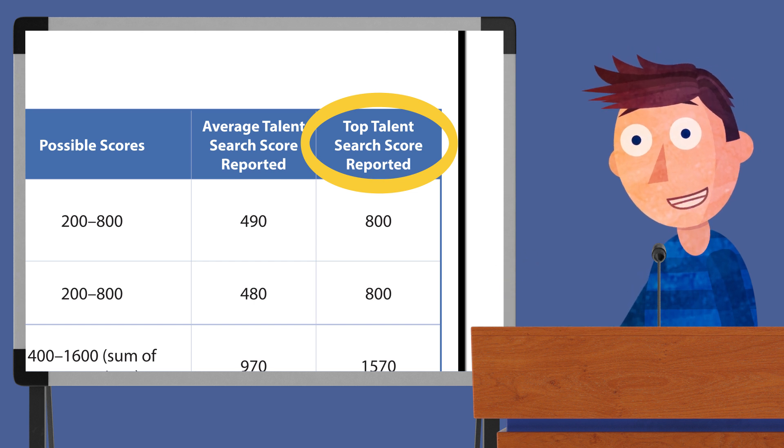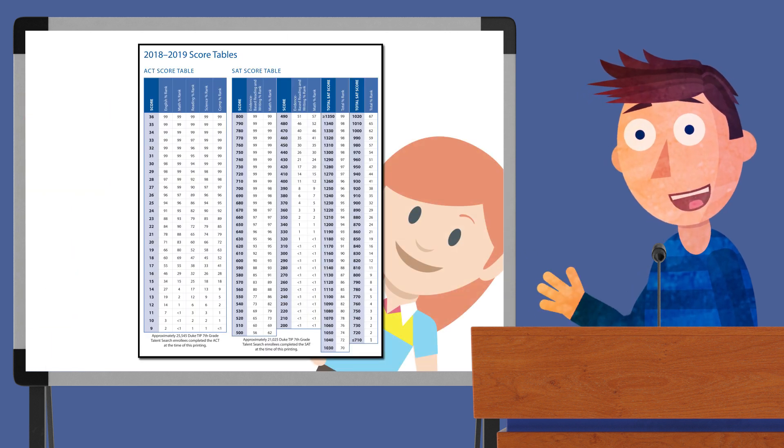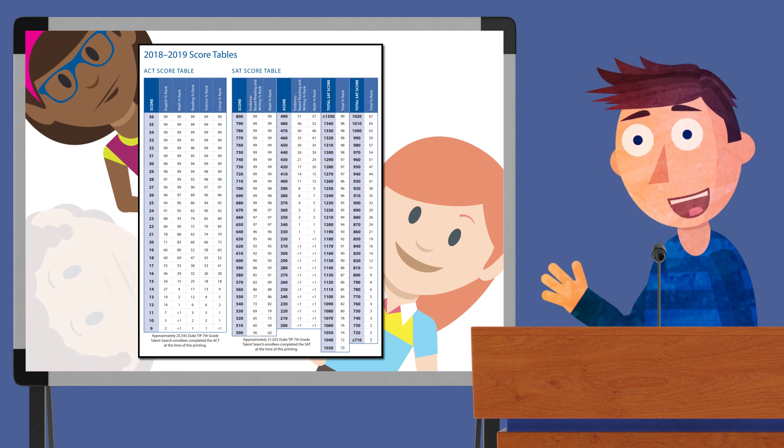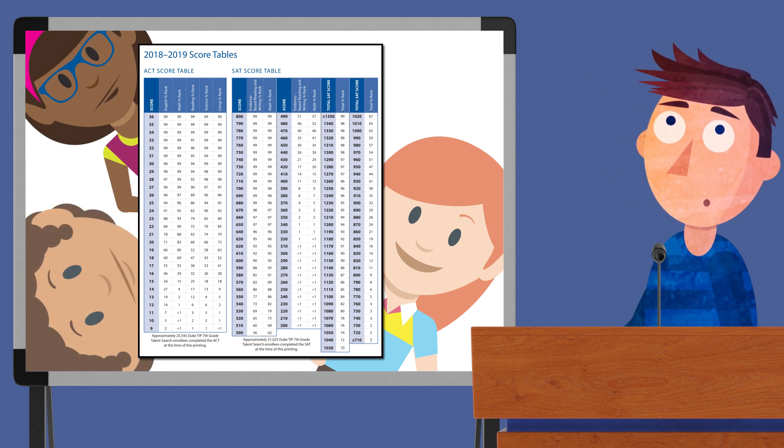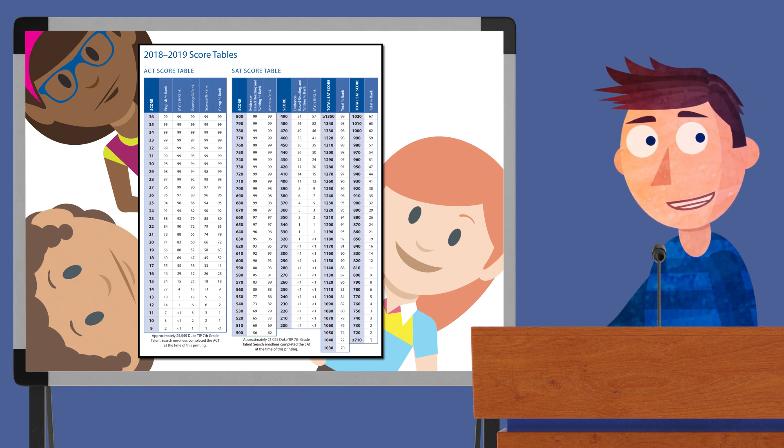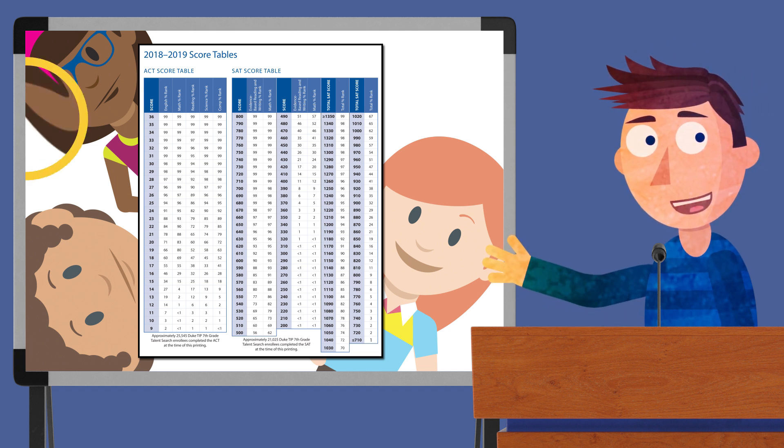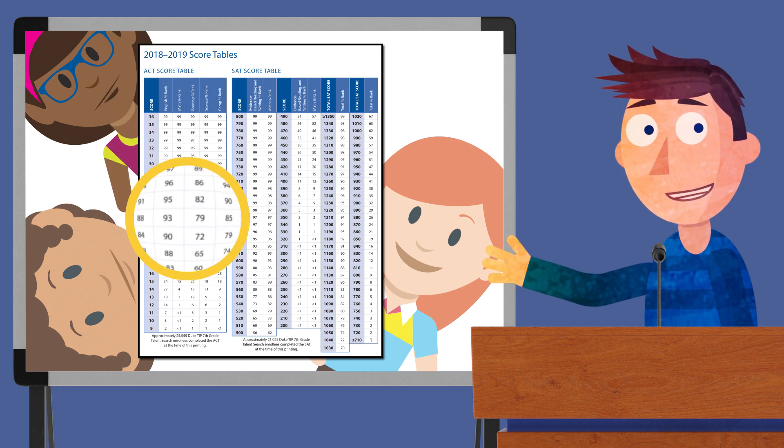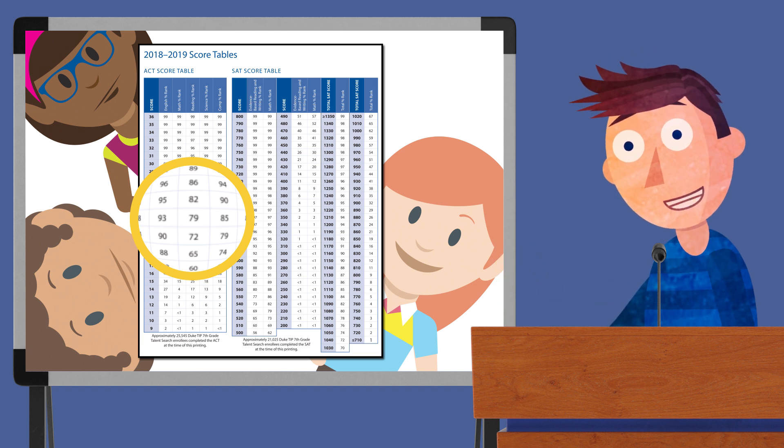We also provide detailed score tables for both the ACT and SAT to help you further compare your child's scores with those of other DukeTip students. Let's look at a past year score table as an example. If your student scored a 23 on the reading section of the ACT, for example, you can scan down and across to see that they scored in the 79th percentile, or better than 79% of the tipsters who took the ACT.